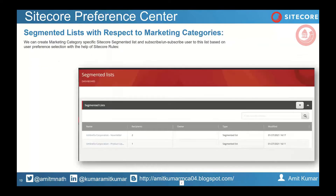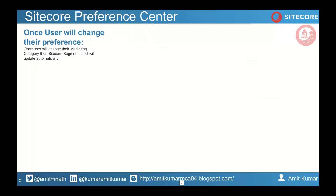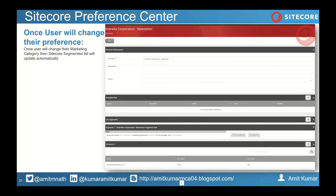Question: How do we access the Sitecore preference center? I am going to show you the demo after completing this. You need to create particular segmentation rules — you are creating marketing categories, and if a user clicks, checks out, or opts in or out of any marketing category, you can move the user to that particular segmentation list. On the basis of these custom segmentation rules the user will automatically land into the correct segmentation category.